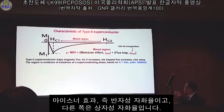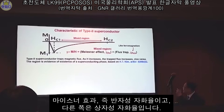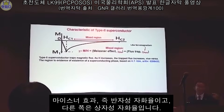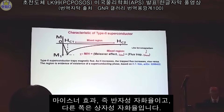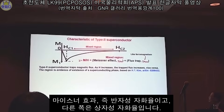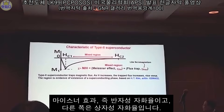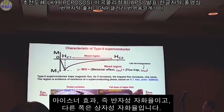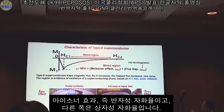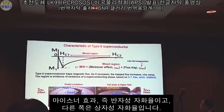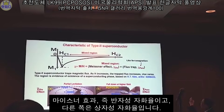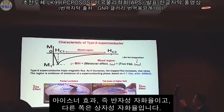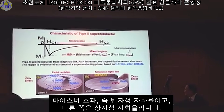The mixed region means it is a mix of two kinds of magnetic susceptibility. By the Meissner effect, there is diamagnetic susceptibility. There is also paramagnetic susceptibility coming from the surface. Para is a positive value, dia is a negative value.